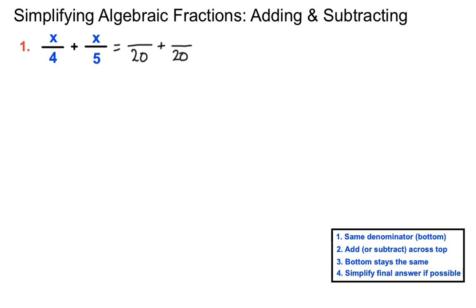We'll turn both these fractions into something over 20 — they're equivalent fractions that way. Whatever we've done to the bottom of a fraction we've got to do to the top; that's a rule for fractions. On the bottom of the left hand fraction we times by 5 to make 4 into 20, so we'll times the x by 5, creating 5x. On the right hand fraction we multiplied by 4, so we'll have 4x on top. Adding across the top: 5x plus 4x makes 9x, keeping the bottom the same. So 9x over 20 is our final answer and that won't simplify down at all.